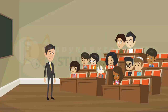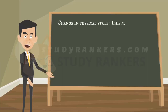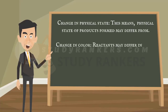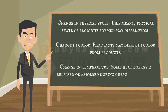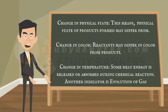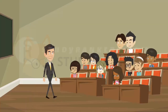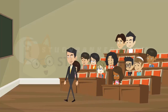How can we identify that a chemical reaction has taken place? There are certain indicators. First, change in physical state — the physical state of the product formed may differ from the reactants. Second, change in color — the color of products may differ from the color of reactants. Third, change in temperature — some heat energy might get released or absorbed during a chemical reaction. Fourth, evolution of gas — some gas is evolved, which can be tested using chemical or physical tests. Can anyone guess how gas evolution can be detected? By its smell, vapors, or bubble formation.